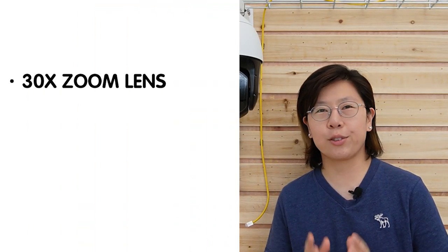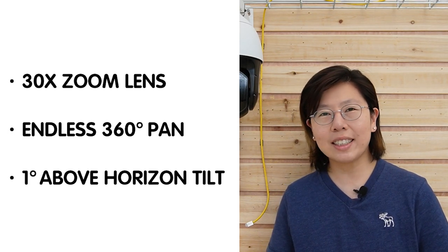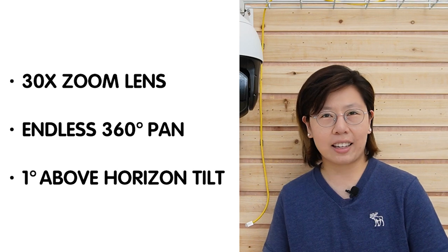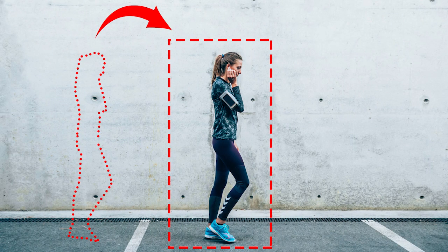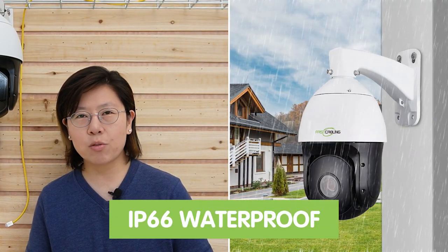This PTZ camera has 30x optical zoom capability, endless 360-degree pan, and a 1-degree above-horizon tilt angle. It also offers overall surveillance with intelligent person detection. It is PoE-enabled and IP66 waterproof rated. The working temperature ranges from minus 35 degrees up to 55 degrees Celsius. It is compatible with ONVIF, which provides great compatibility with various NVRs on the market.